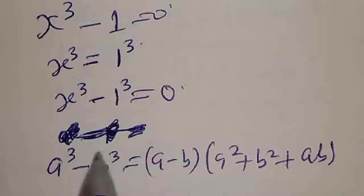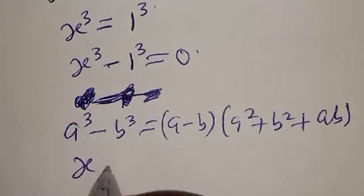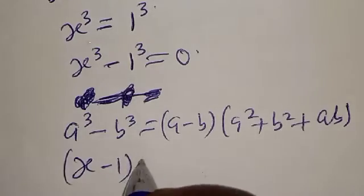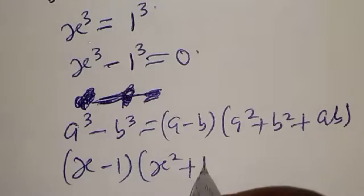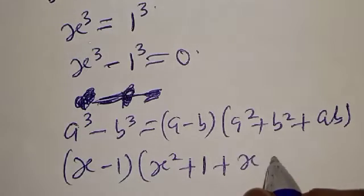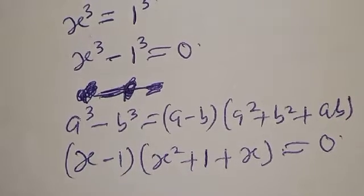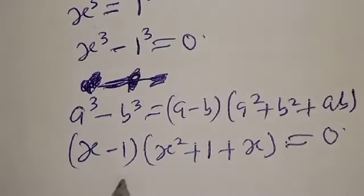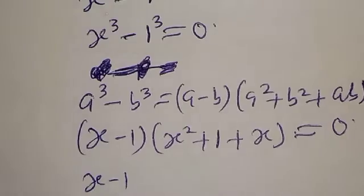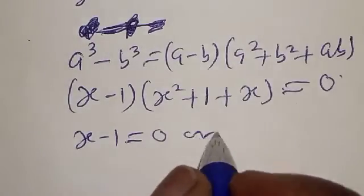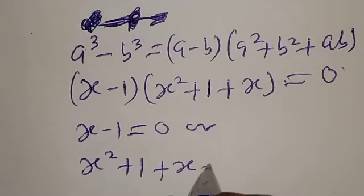Here a is equal to s and b is equal to 1. Substituting into the difference of cubes formula, we get (s minus 1) multiplied by (s² plus 1 plus s) equal to 0. Therefore, we have s minus 1 equal to 0, or s² plus s plus 1 equal to 0.